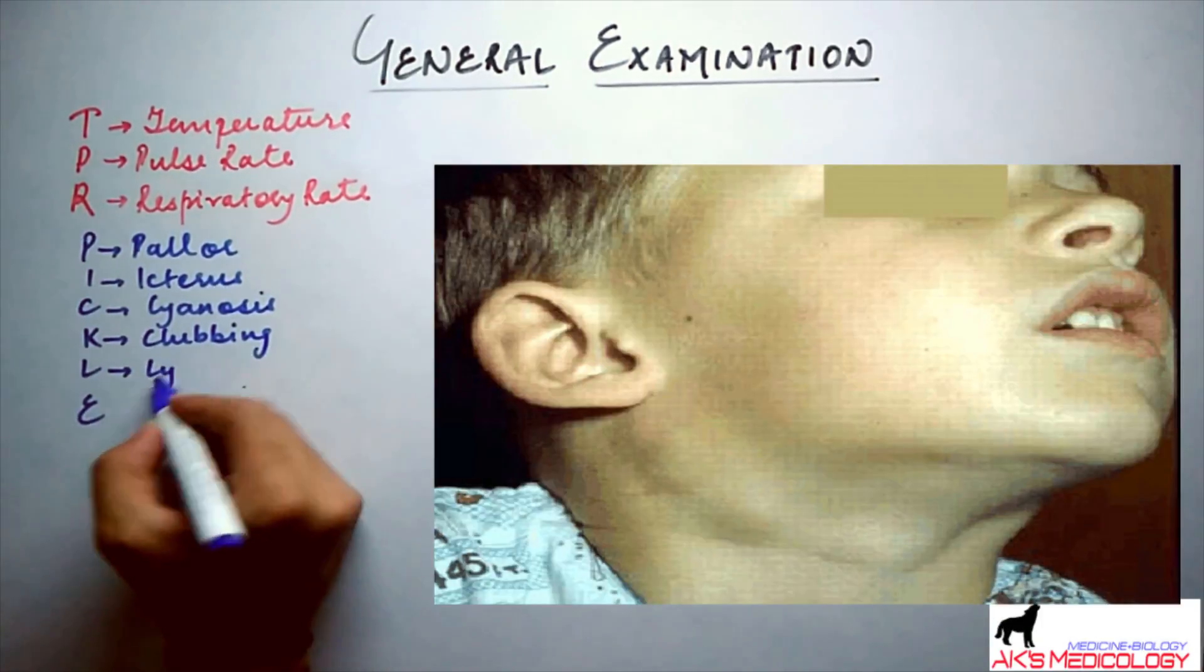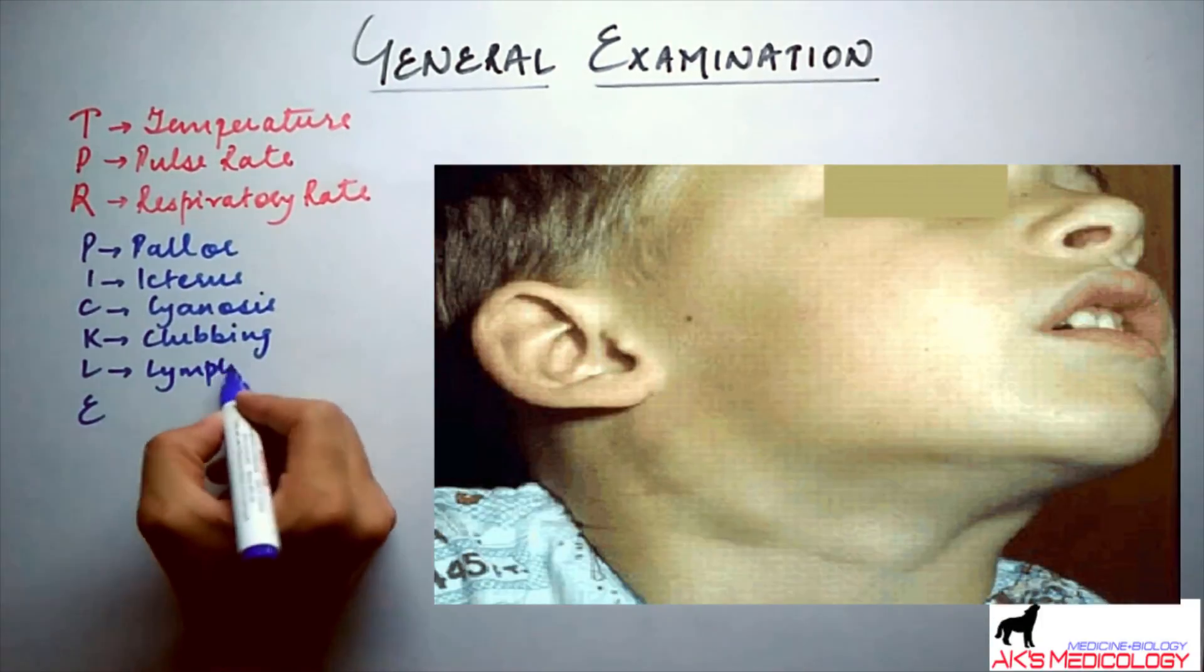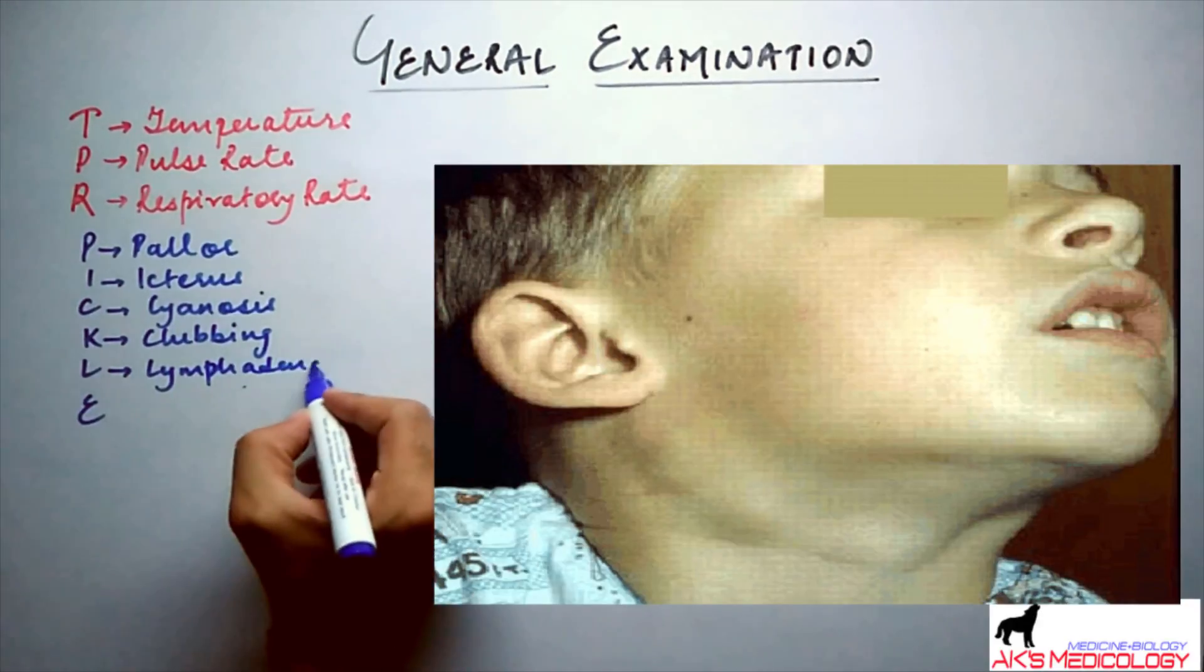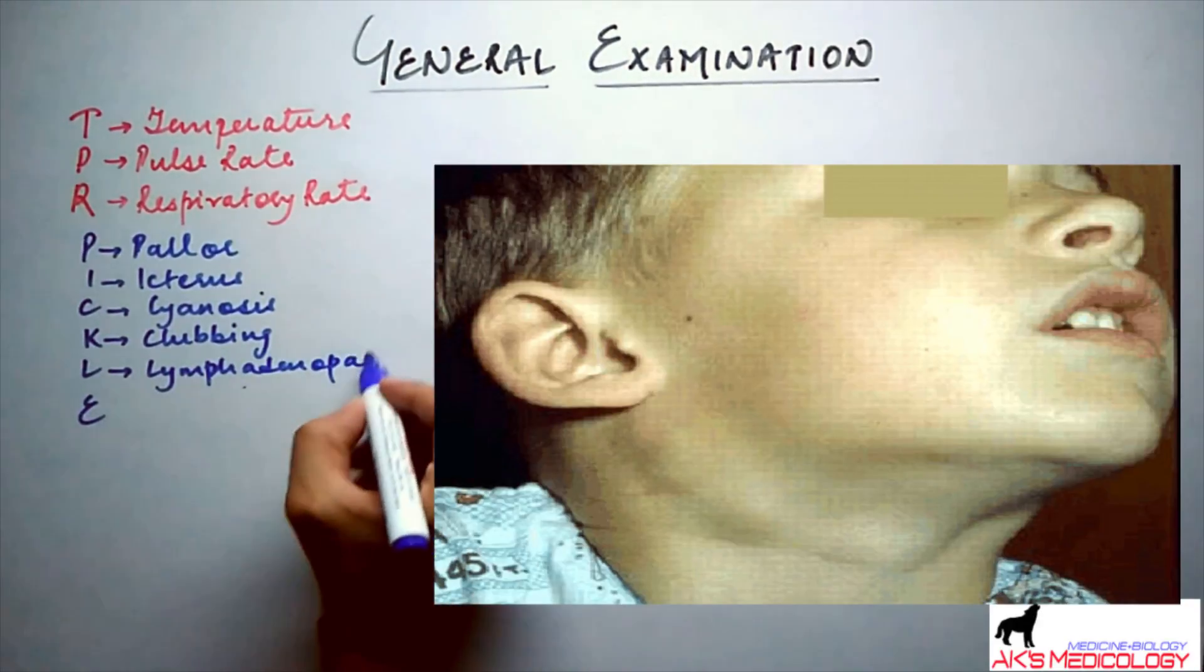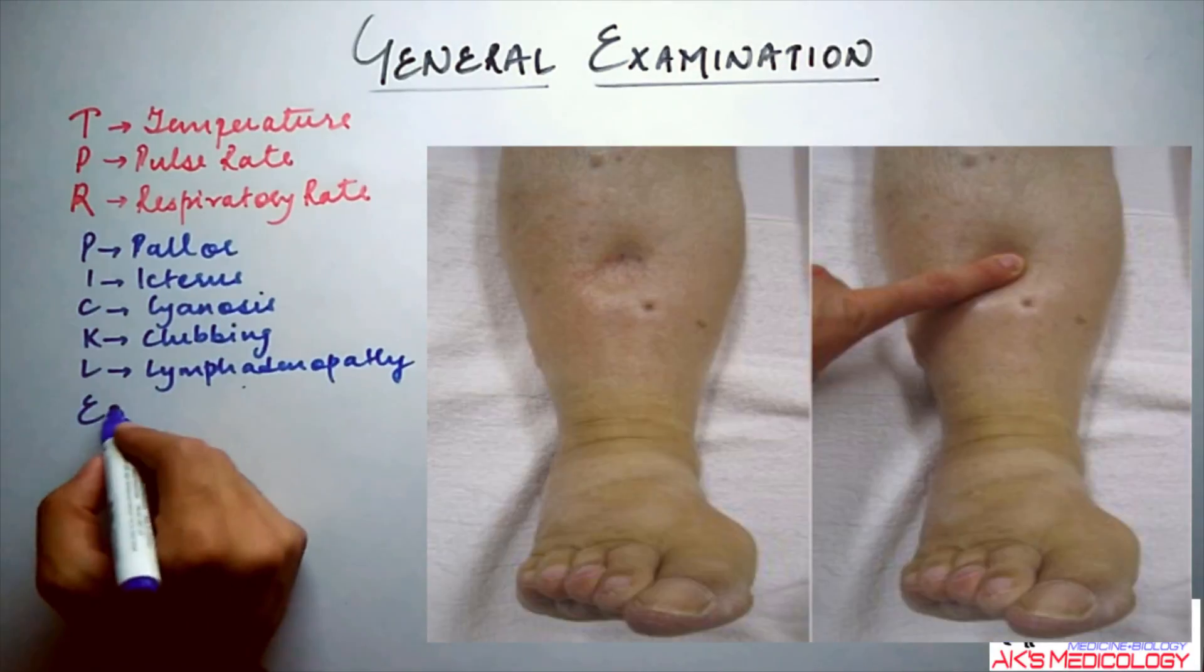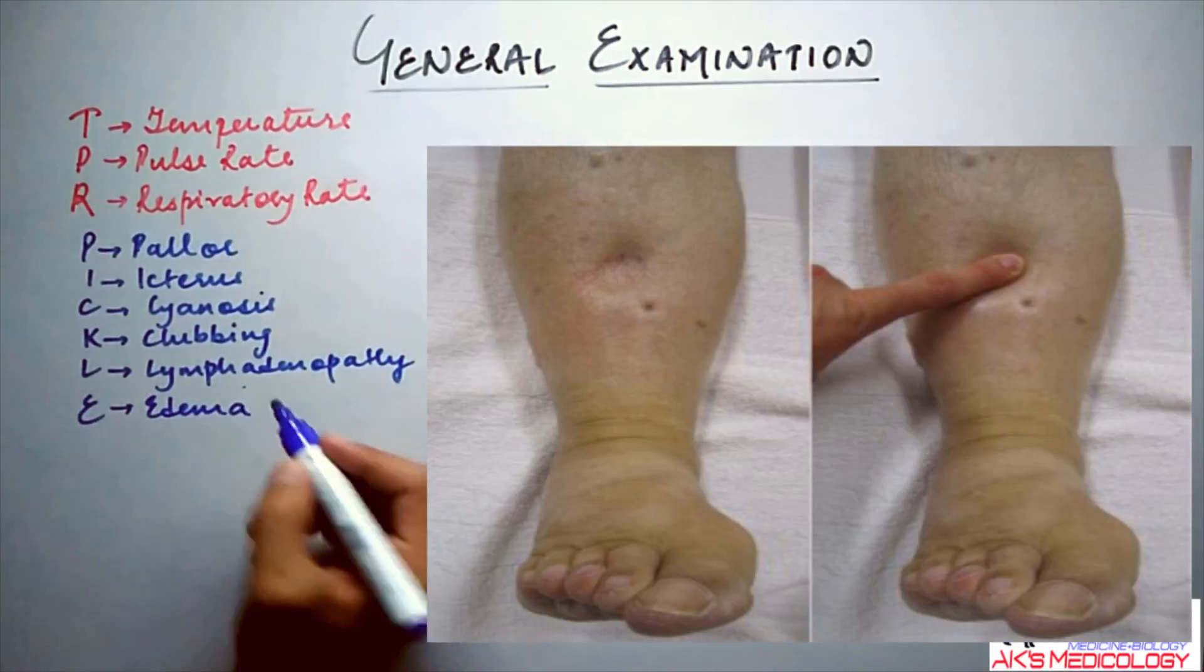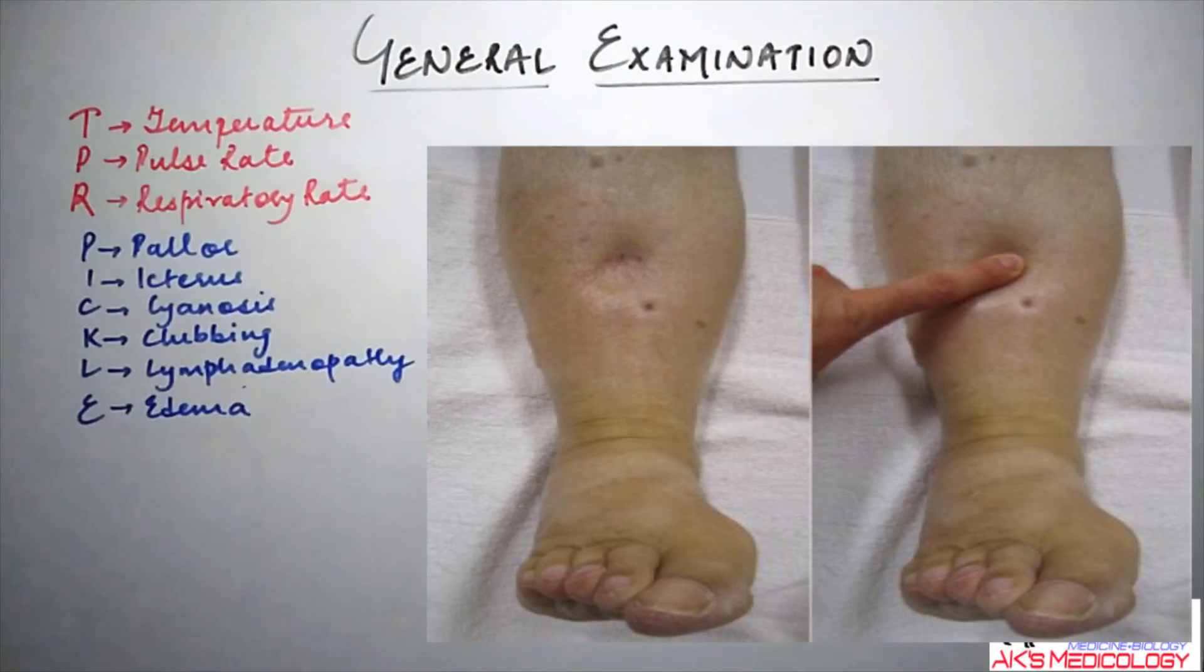L stands for enlarged lymph nodes or lymphadenopathy, which could be generalized or localized, and E stands for edema, which could be anywhere like periorbital or pedal.